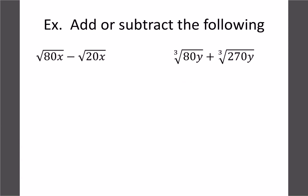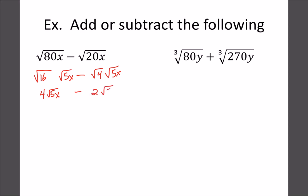Let's try a couple more with x's and y's — the same rules still apply. For √(80x): break 80 into 16×5, and the x can't be square-rooted, so we get 4√(5x). For the second one, if we spot √(5x) again, then √(20x) ÷ 4 gives us a perfect square of 4, so we get 2√(5x). Then 4√(5x) - 2√(5x) = 2√(5x).